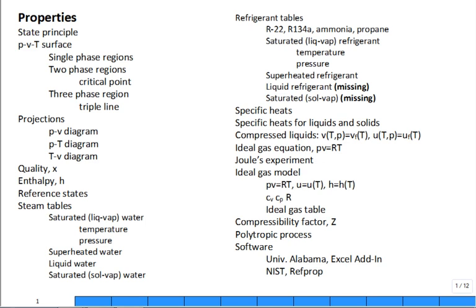We're closing in on finishing up this chapter — we need to talk about the compressibility factor. That's basically for real gases, which is when you don't have an ideal gas but it's close to being an ideal gas. We can use a compressibility factor.